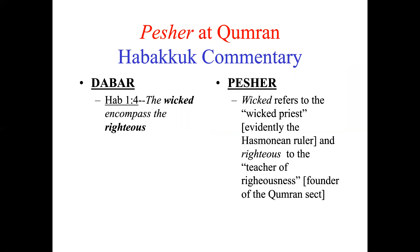The davar says in chapter one and verse four, 'the wicked encompass the righteous.' But then the Pesher at the bottom says the wicked refers to the wicked priest — evidently one of the Hasmonean rulers at the time, the Jewish rulers who were not Jewish enough as far as the commentator is concerned. And the righteous is the teacher of righteousness, who from other Qumran texts seems to be the founder of the Qumran community. So this verse means that the wicked priest is persecuting the teacher of righteousness.